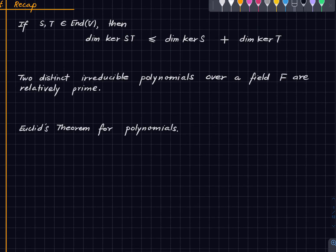Next, a matter of definitions mostly, is that two distinct irreducible polynomials over a field are relatively prime. And lastly we will need Euclid's theorem for polynomials, which says that if a(x) and b(x) are two relatively prime polynomials over some field F, then there exist polynomials p(x) and u(x) such that this happens.